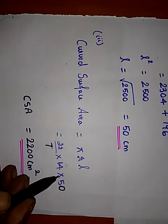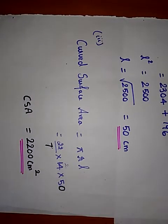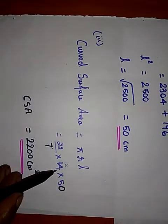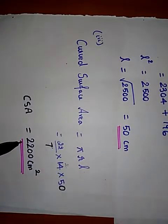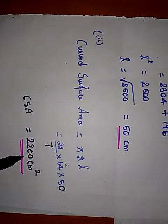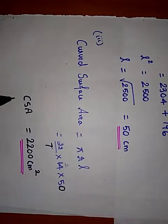Calculating: 22/7 × 14 × 50 = 22 × 2 × 50 = 2200 centimeter square. Therefore, the curved surface area is 2200 centimeter square. We have found all three answers correctly.